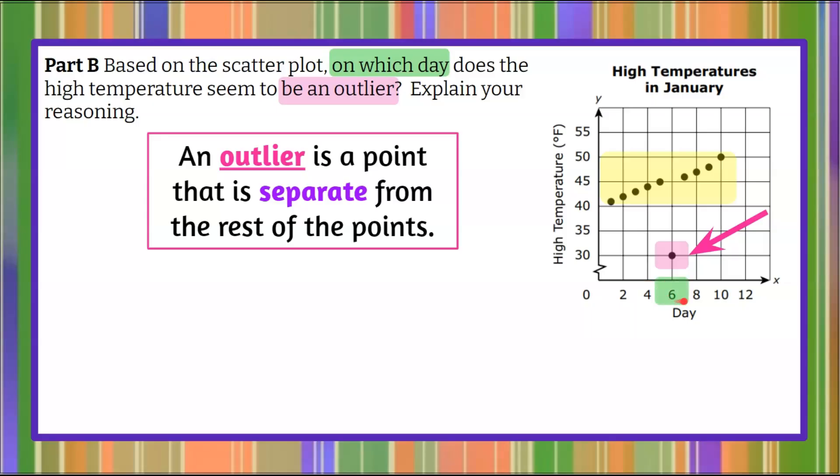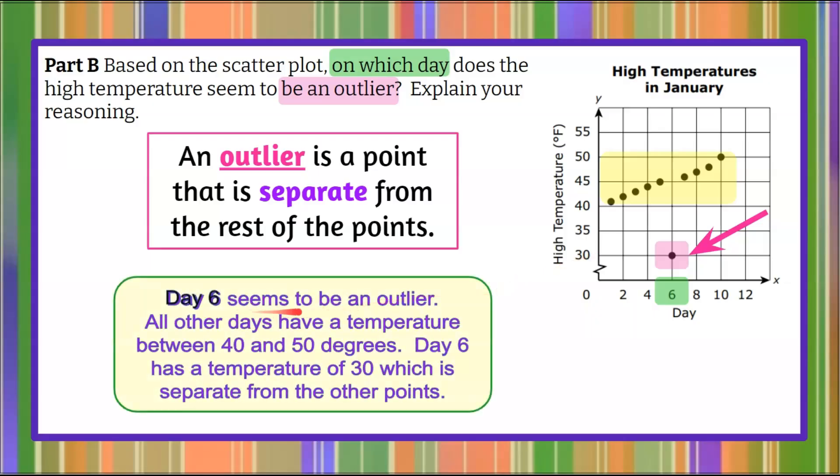So we can conclude that on day 6, there is an outlier. So if we look at this, the temperatures in January, we can see that day 6 in January was the only day that we have data collected for that wasn't between 40 and 50 degrees for a high. On day 6, it dropped to 30. So let's answer our question to explain our reasoning. Day 6 seems to be an outlier. All other days have a temperature between 40 and 50 degrees. Day 6 has a temperature of 30, which is separate from the other points.